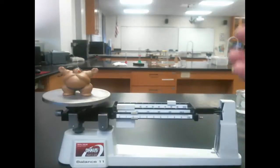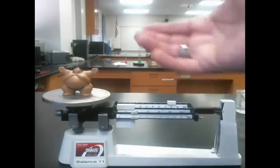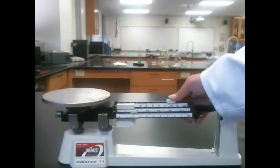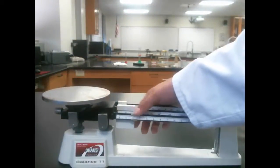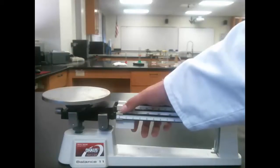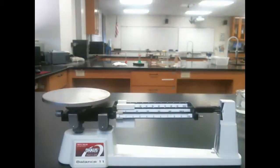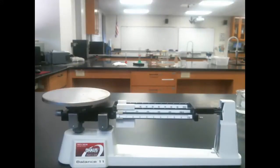When you're done, the most important thing about a triple beam balance is to put it back to zero, so that you don't accidentally mismeasure something the next time you put it on. So take the object off the balance pan and re-zero the sliders.